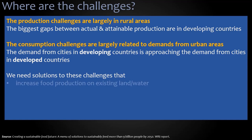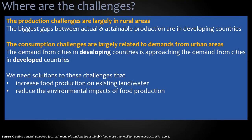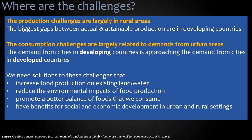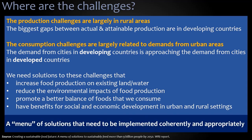We need solutions to these challenges. These solutions need to increase food production on existing land and water — there's very little scope to plant crops on additional land. We need to reduce the environmental impacts of food production and make our food systems more sustainable so ecosystems are resilient. We need to promote a better balance of foods that we consume, changing consumer behavior and attitudes to food. And all of these things must have benefits for social and economic development in both urban and rural settings — benefits for producers, consumers, and everybody involved in food systems. This has to be a menu of solutions implemented coherently in the right place.